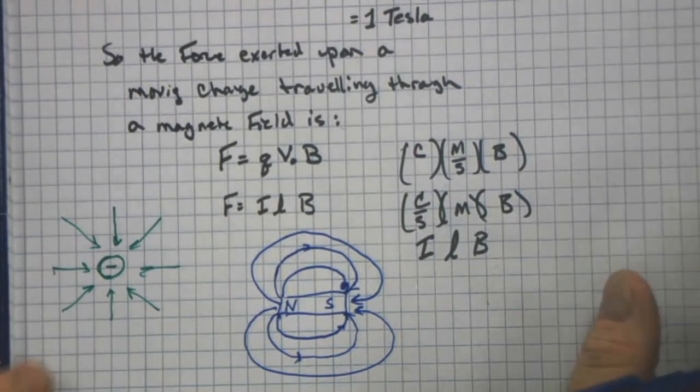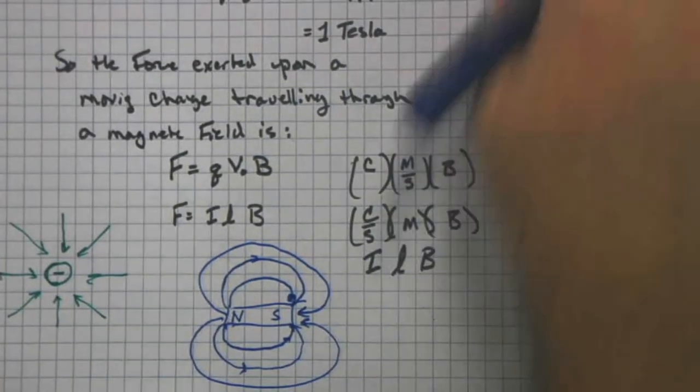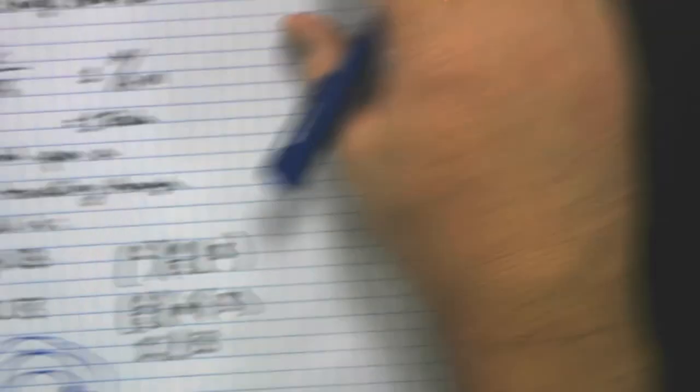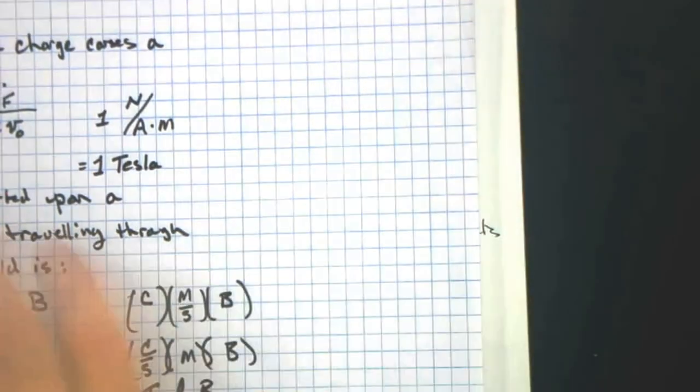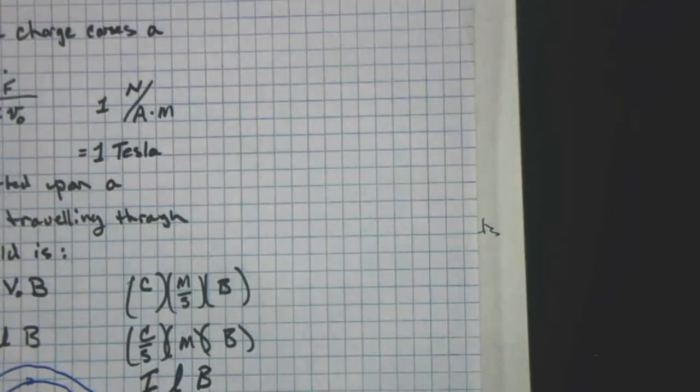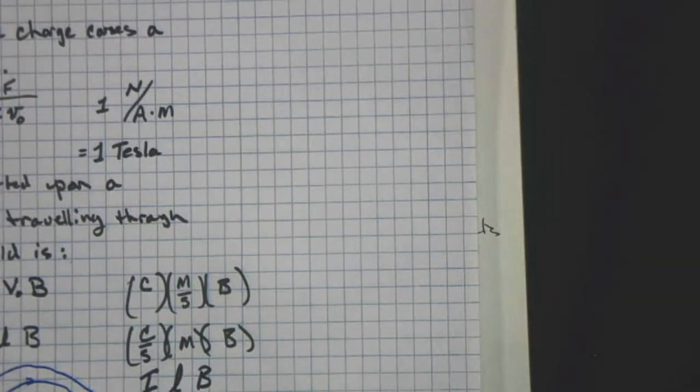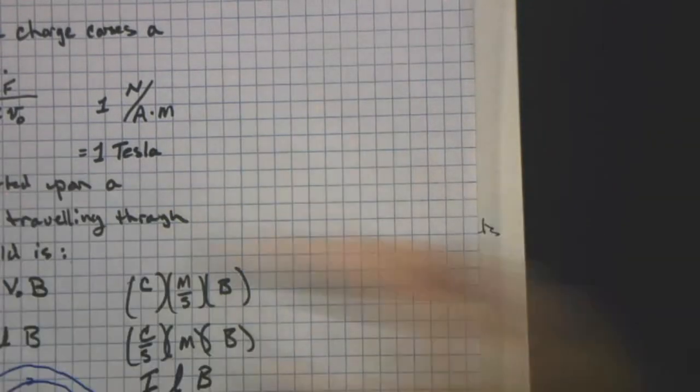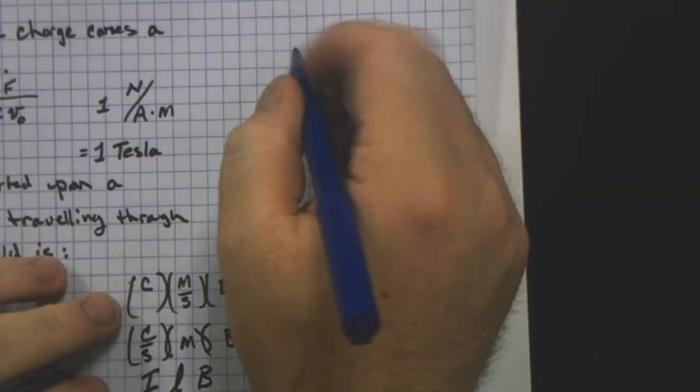Now, here's the next part about fields, and this part is really, really cool. Fields follow, or magnetic fields and charges moving through magnetic fields follow what's called the right-hand rule. And this is cool stuff.